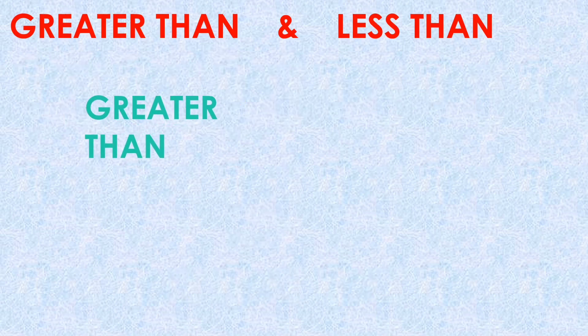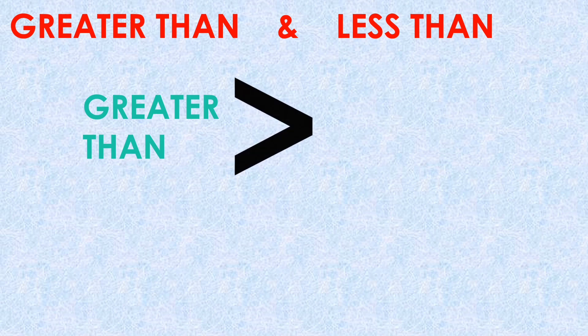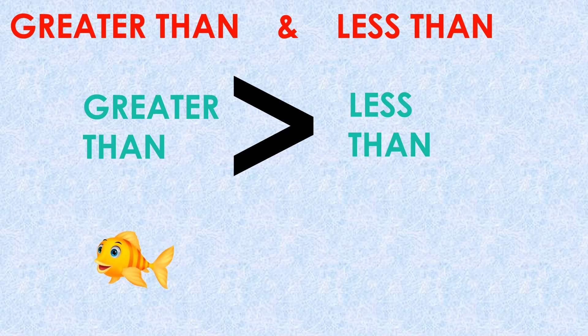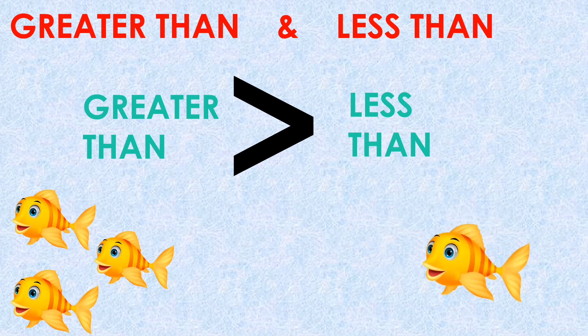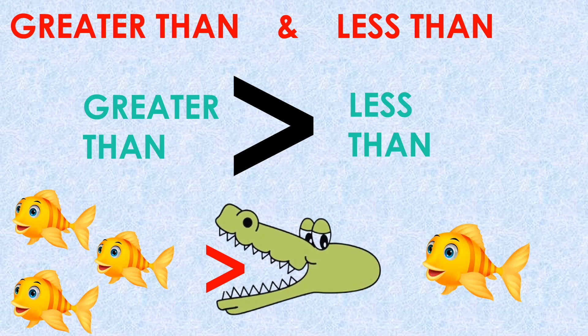Greater than, less than. This is the sign of greater than. There are three fish on one side and one fish on the other side. So where will the crocodile go? Yes, the crocodile will go toward the more fish.